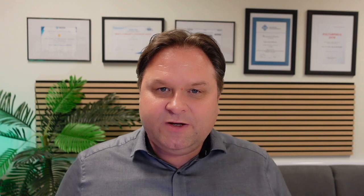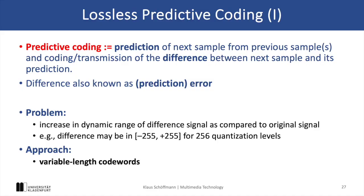Now what is predictive coding? The idea here is to predict the next sample based on the previous sample or samples and then encode only the difference or error between the predicted and the actual values. This error, also known as the prediction error, is what gets transmitted or stored, because the decoder will also perform the same prediction. A particular problem here is that the dynamic range of the prediction errors might be larger than the original signal, which can happen when the prediction is less accurate.